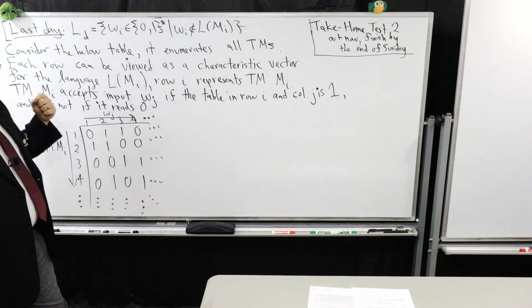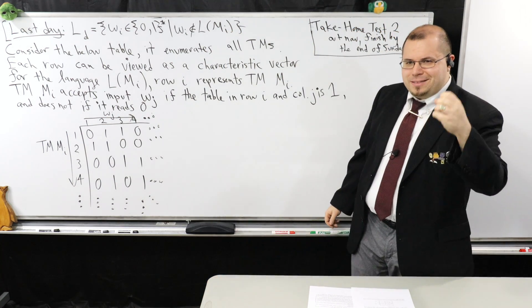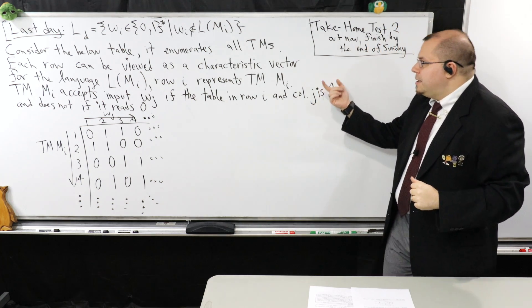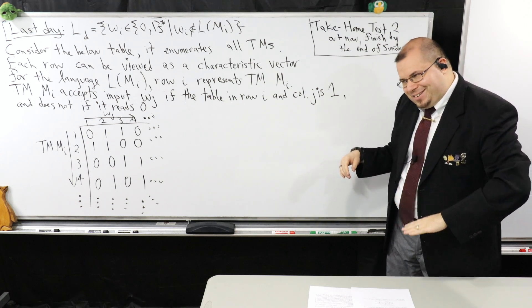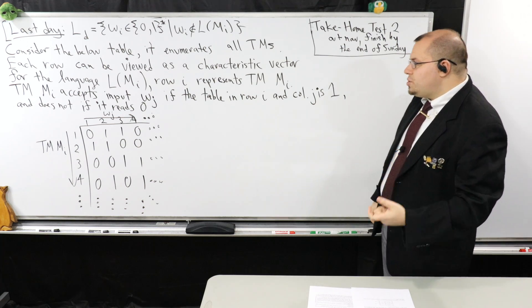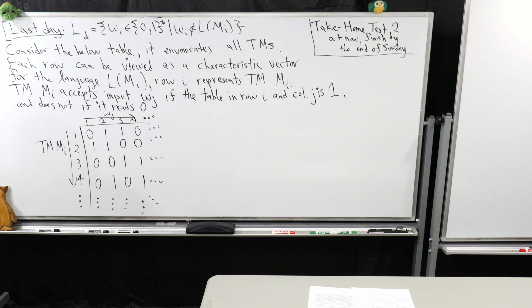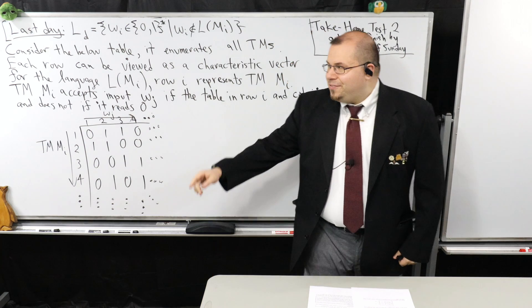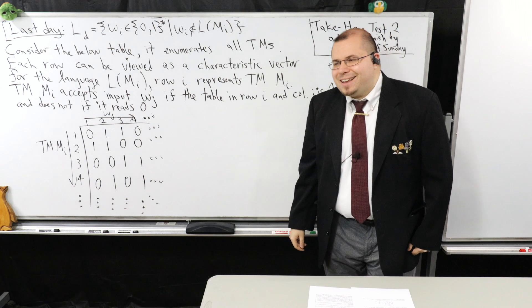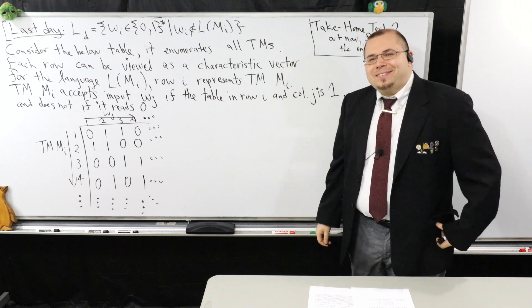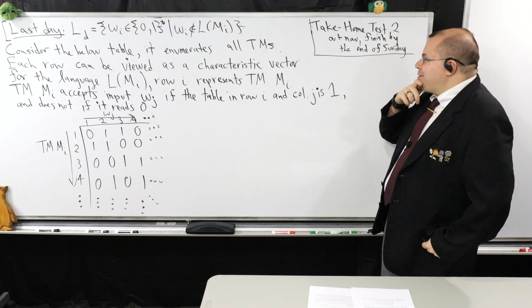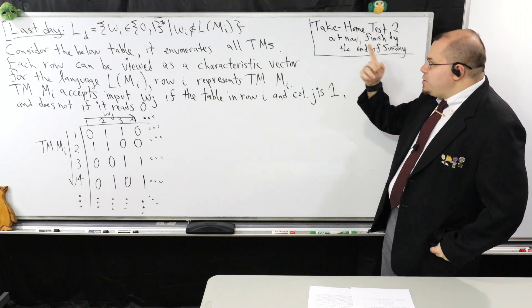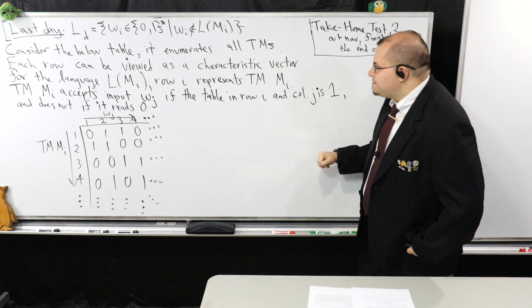I want to bring us back to where we left off last day. I did a whole bunch of setup over the last couple of lectures, so I'm hoping to go through a bunch of interesting results quickly. Last day I was setting up a table to enumerate all possible languages for any given Turing machine. I showed you how to encode any Turing machine as a positive integer, and I defined the diagonalization language LD — which is self-referential in the sense that WI could be the description of itself.